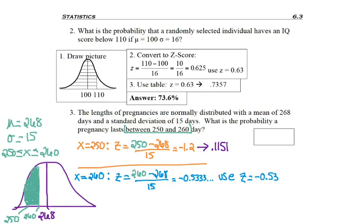So now when I look up negative 0.53, so row negative 0.5, column 0.03, I find 0.2981. And that's the area from this 260 all the way to the edge, but that means it's also including that little white corner that I don't want.